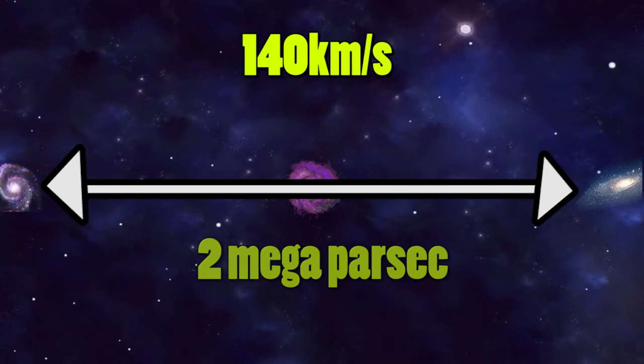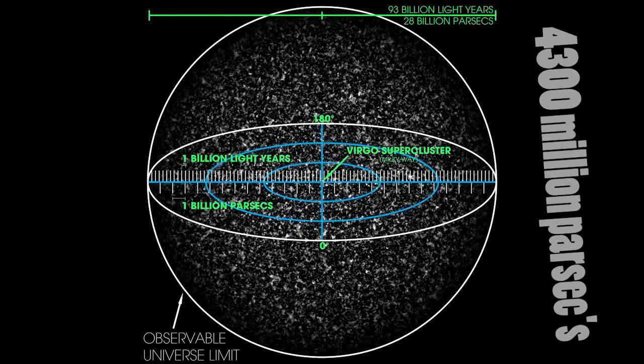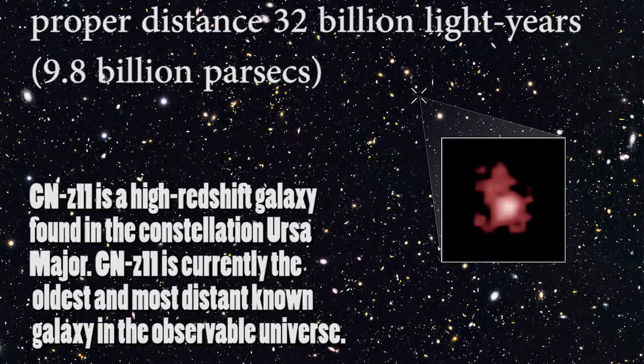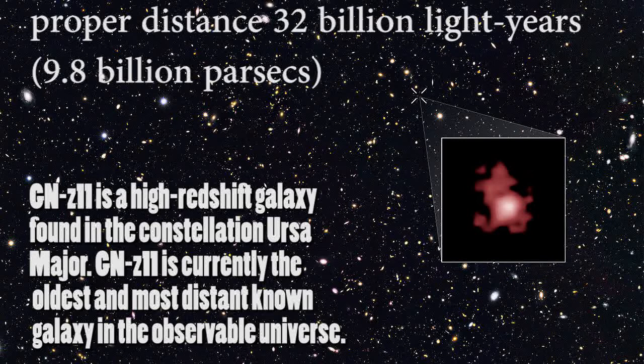If the separation between two galaxies is around 4,300 million parsecs, then the galaxies would be literally moving away from each other at the speed of light. Beyond that, they would be moving away from each other even faster than the speed of light. And as 4,300 million parsecs is smaller than the radius of the observable universe, it means galaxies are truly moving faster than the speed of light away from us.